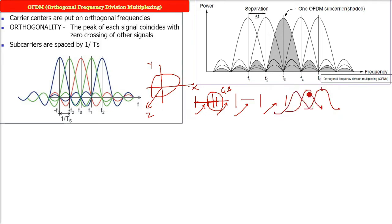So the peak of the first, wherever there is a peak of first, there will be zero for others. The peak of the second, there will be zero for others. That is, the other frequencies will not be interfering with the frequencies in question. So the peak of each signal will coincide with the zero crossing of all other signals. That is how we achieve orthogonality.